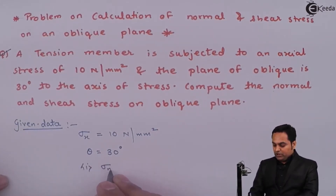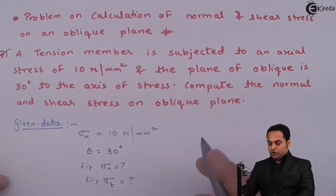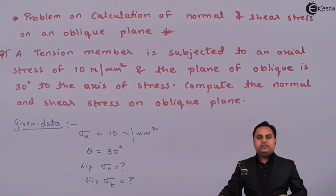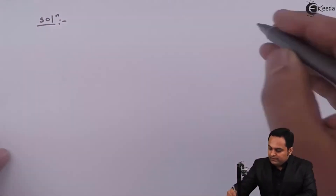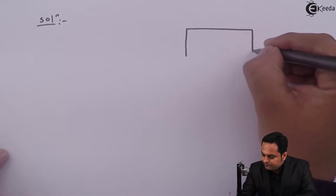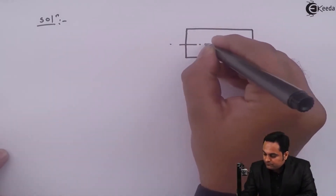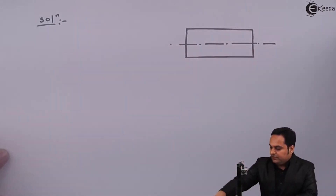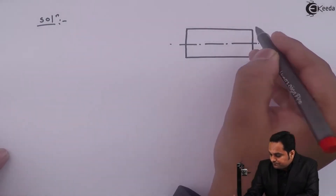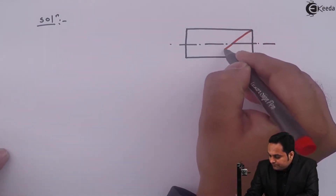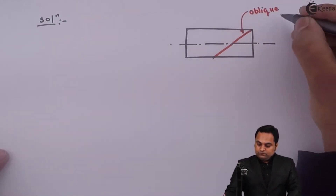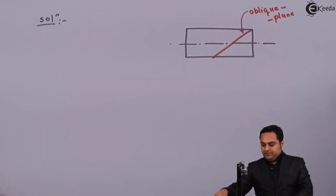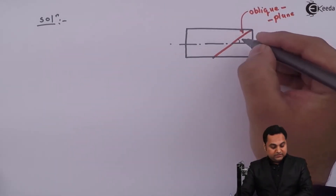We have to find out the value of normal stress and shear stress — also called tangential stress — on this oblique plane. In the solution part, I'll draw a diagram considering it to be a rectangle. This is the axis of the rectangle, and now we have an inclined plane which is the oblique plane. The plane shown in red is the oblique plane, and the angle of the oblique plane is 30 degrees as given in the problem.